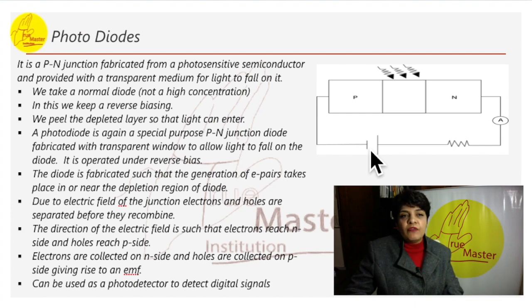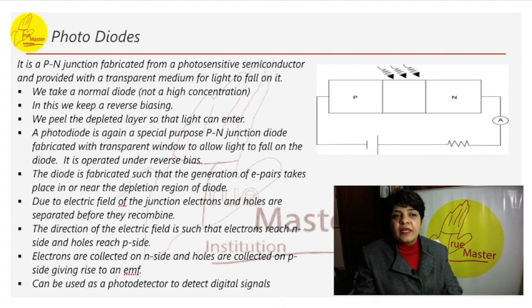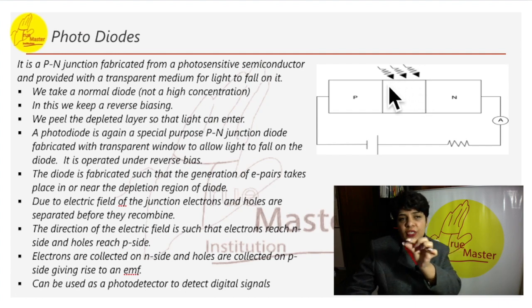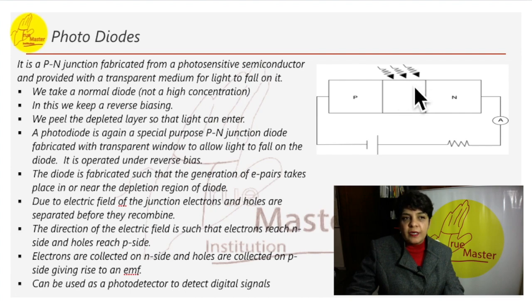In this photodiode, we have kept it for the reverse biasing. We peel the depletion layer so that the light can enter. This was in the center, a depletion layer, so we have kind of ripped it so that the light can enter from here. The diode is fabricated such that the generation of E pairs takes place in or near the depletion region of the diodes.